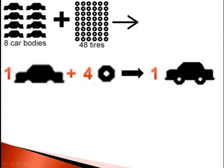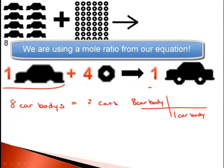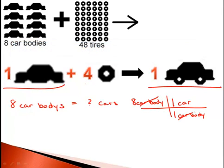So the question comes in, with 8 car bodies, how many cars can we make? We can do a simple stoic problem where we do 8 car bodies, and we need 1 car body to produce 1 car. Therefore, with 8 car bodies, we could make 8 cars.